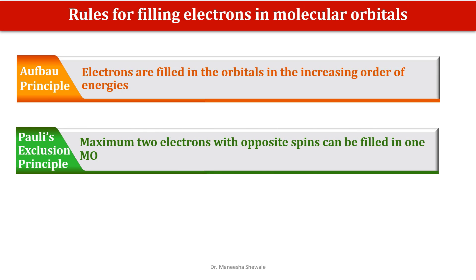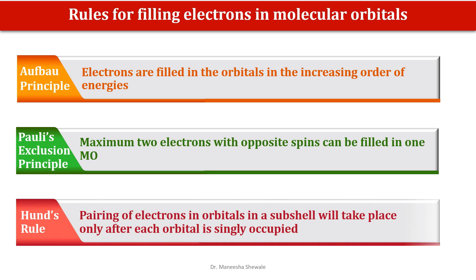The second is the Pauli's exclusion principle: a maximum of two electrons with opposite spins can be filled in one molecular orbital. The third is Hund's rule: the pairing of electrons in orbitals in a sub-shell will take place only after each orbital is singly occupied.